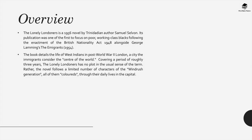The Lonely Londoners is a 1956 novel by the Trinidadian author Samuel Selvon. Its publication was one of the first to focus on poor working class black people following the enactment of the British Nationality Act in 1948, alongside George Lamming's The Immigrants in 1954. The book details the life of West Indians in post-war London, a city they consider the centre of the world.